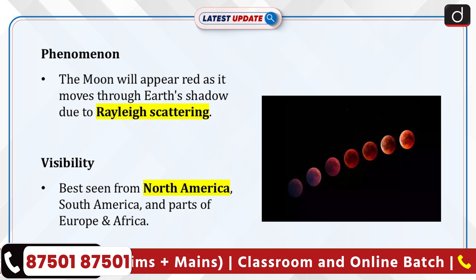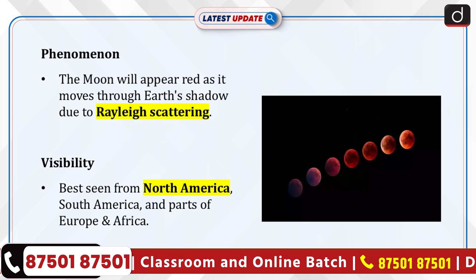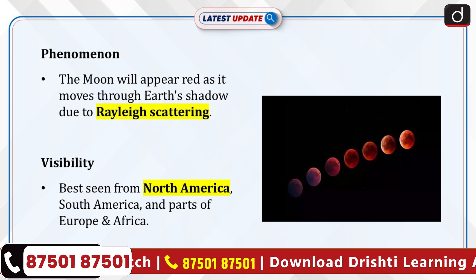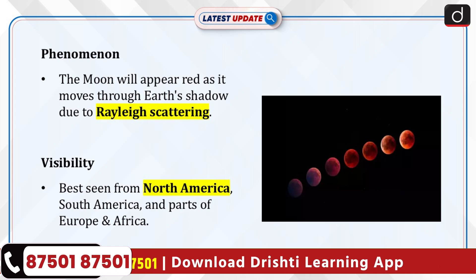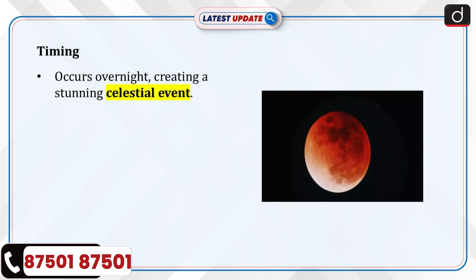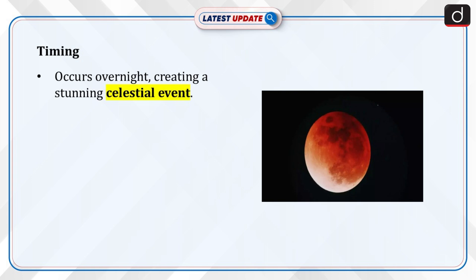The moon will turn red as it passes through Earth's shadow due to Rayleigh scattering. The eclipse will be visible across North America, South America, and parts of Europe and Africa.